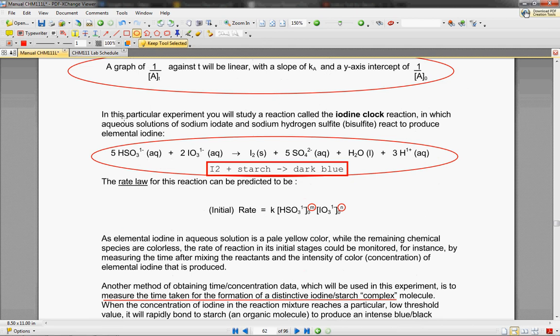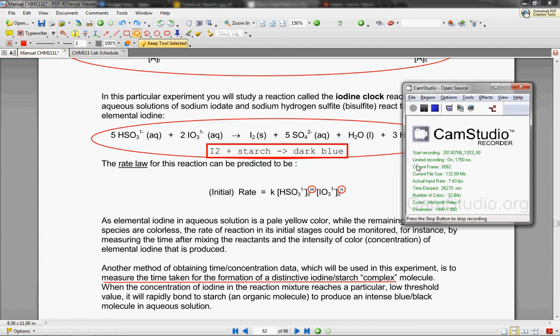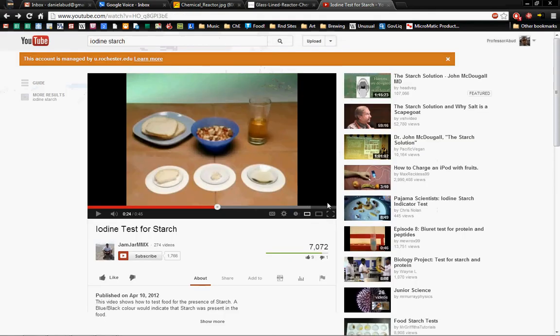In this lab, we're going to be using this reaction right here. The way we're going to determine if there's any iodine left - essentially we're going to be making pure iodine. We're going to be using HSO3 and IO3 to make I2, and I2 is just pure iodine. The cool thing about iodine is that you can mix it with starch, and it makes this dark blue compound.